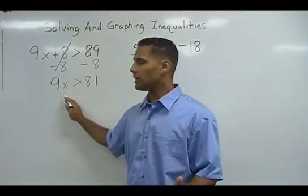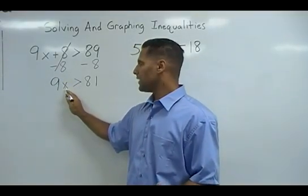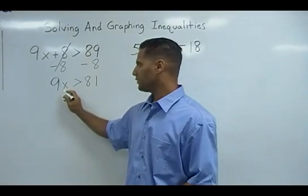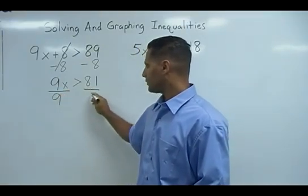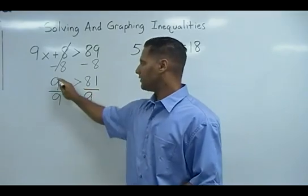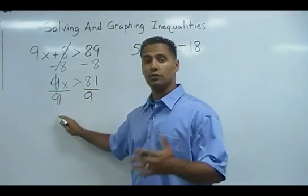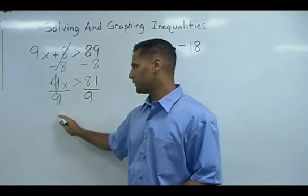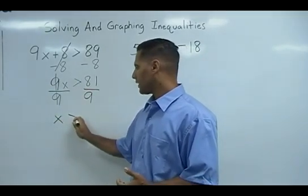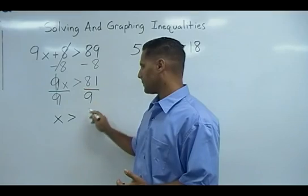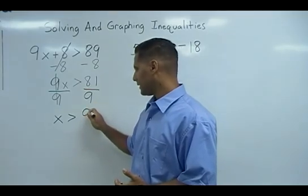Now x is not yet isolated. We still have to get rid of this 9. The opposite of 9 times x would be dividing by 9. So we're going to divide both sides by 9. This side divides by itself to give us just 1, but we never write 1 as a coefficient, so that leaves us with only the x. And we drop down our inequality sign and we have 81 divided by 9, which is 9.